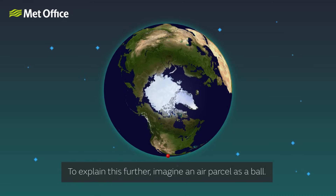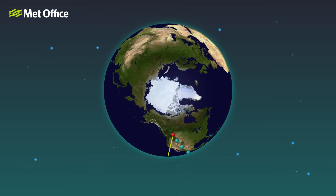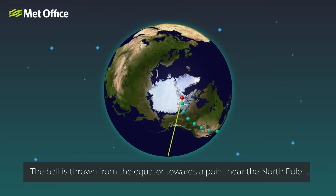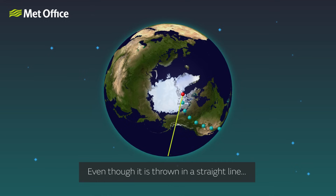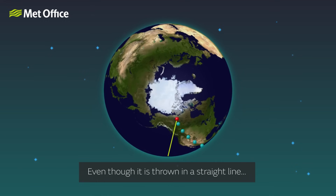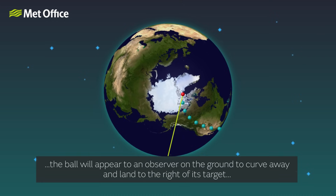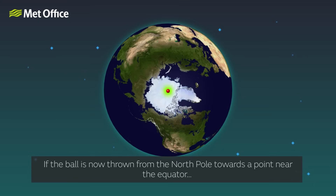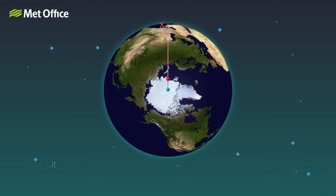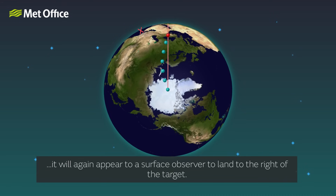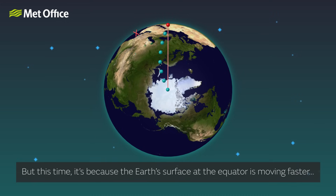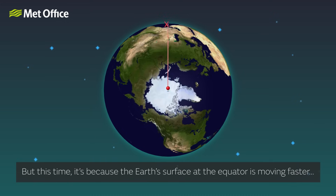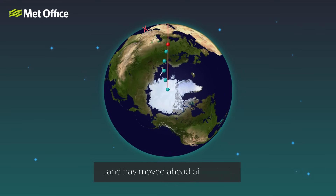To explain this further, imagine an air parcel as a ball. The ball is thrown from the equator towards a point near the north pole. Even though it moves in a straight line, the ball will appear to an observer on the ground to curve away and land to the right of its target, as the point near the north pole is moving more slowly and is not caught up. If the ball is thrown from the north pole towards a point near the equator, it will again appear to a surface observer to land to the right of its target, because the Earth's surface at the equator is moving faster and has moved ahead of the ball.